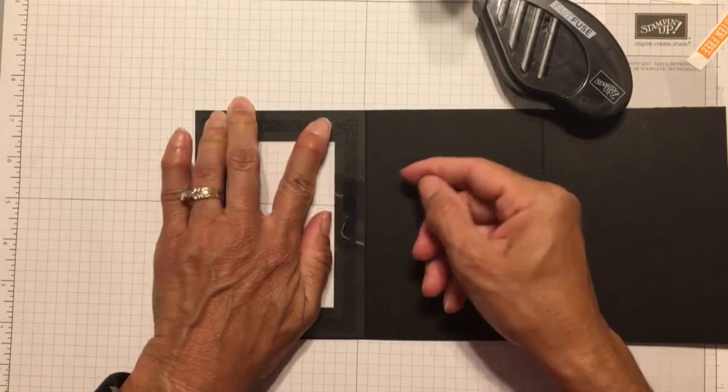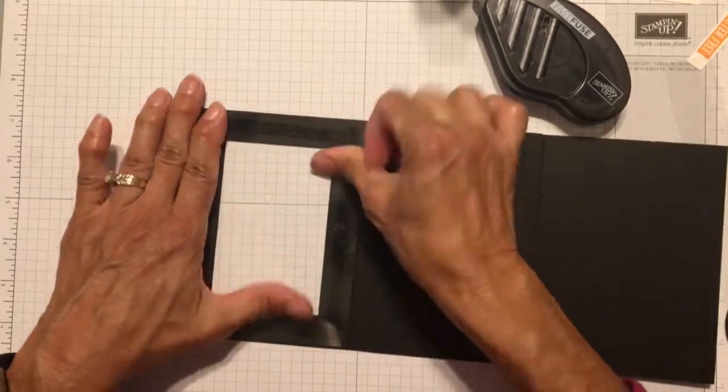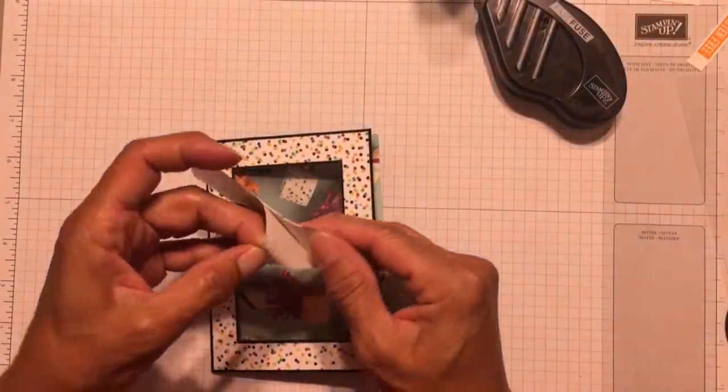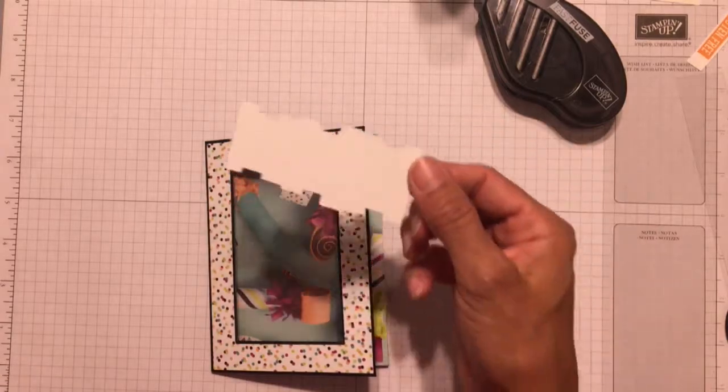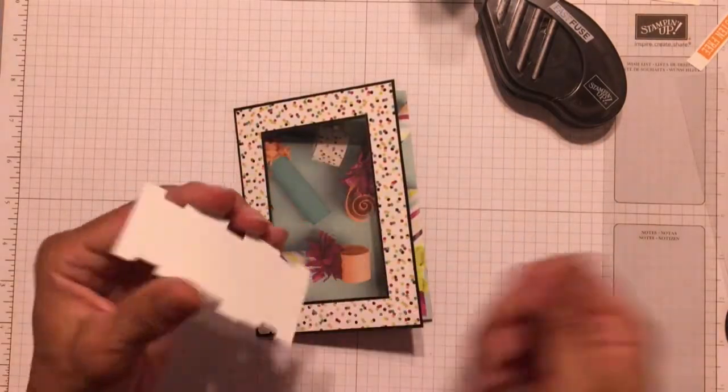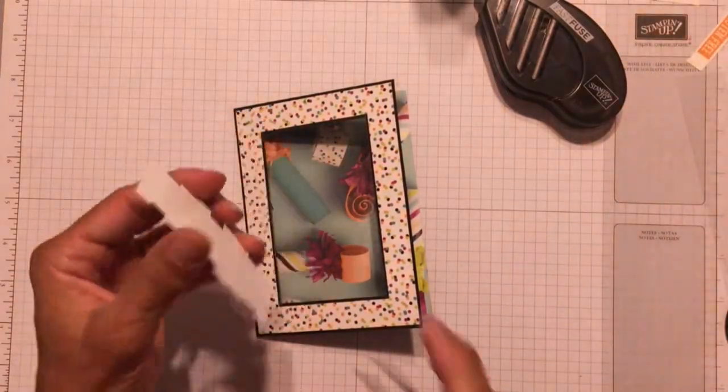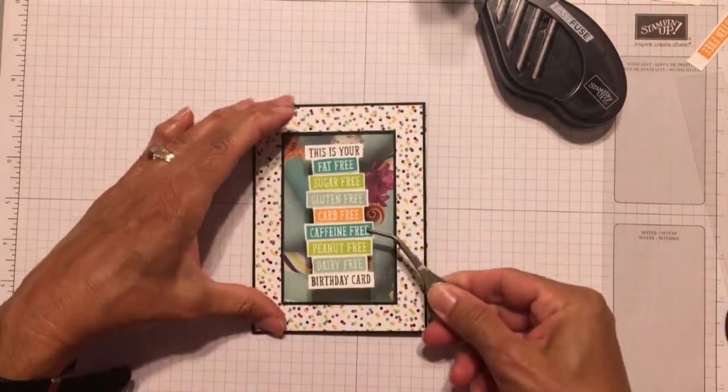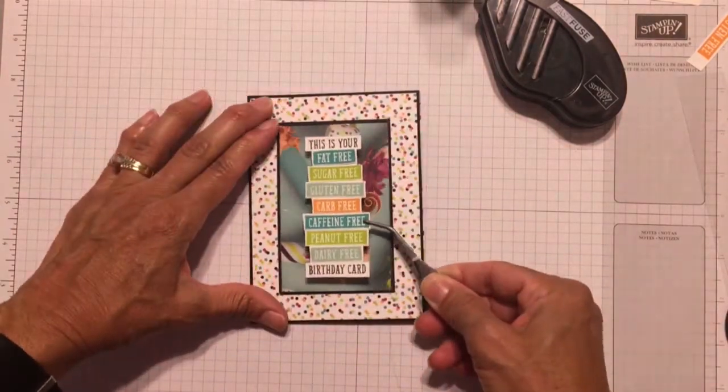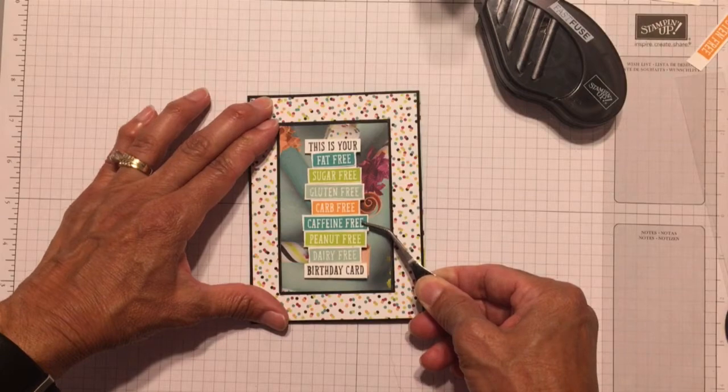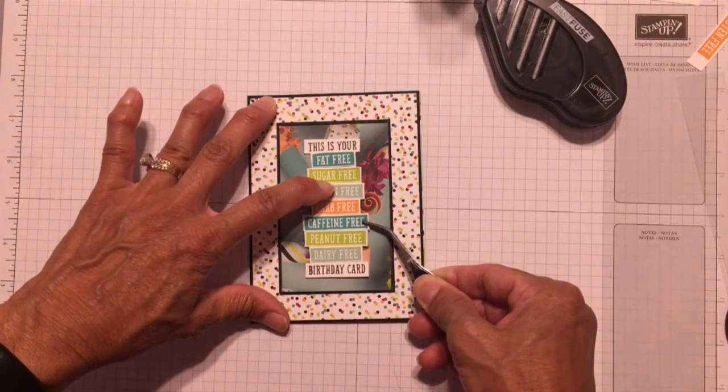To finish the front of the card, all I have to do now is apply my sentiment. So I just peel off the backer off of the adhesive sheet. And I am going to use tweezers because I really want to make sure that my sentiment ends up in the center of the window. So I'm just holding it with some tweezers and getting it placed just right and then just pressing it down.